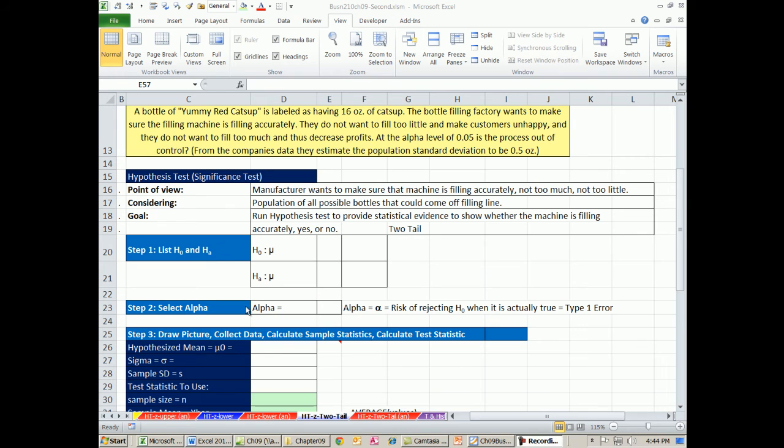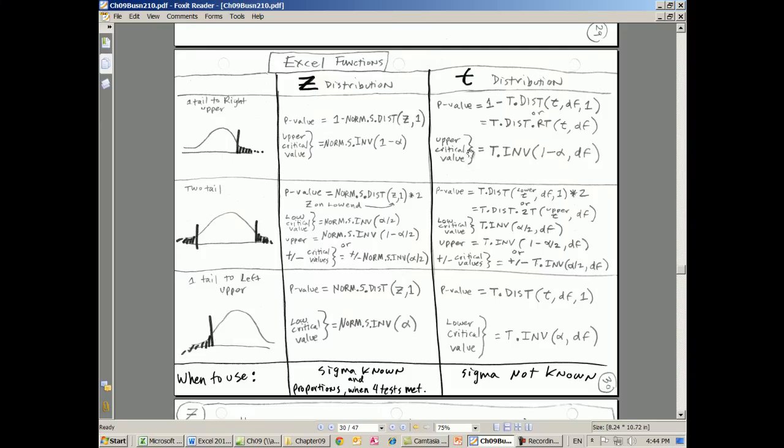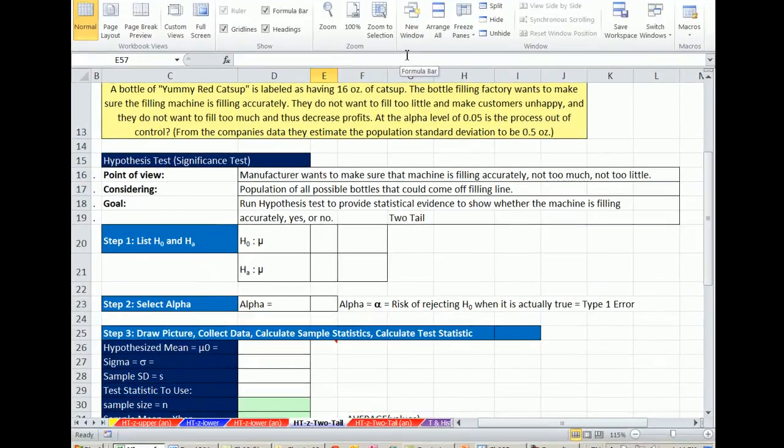Welcome to Excel 2013 Statistical Analysis video number 55. If you want to download this workbook or the PDFs, click on the link below the video. In the PDFs near the end, pages 30 through 33, it has all of the Excel functions for all the formulas we're doing for hypothesis testing in this chapter 9. So that's a good one to download.